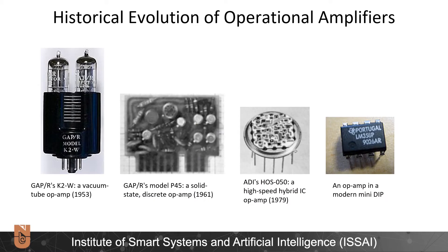Here we see the historical evolution of operational amplifiers. In 1953, we had op-amps with vacuum tubes, not even transistors. Then, the first discrete op-amps and first integrated circuits emerged in 1961 with the P45 type operational amplifier, which had visible resistors, capacitors, and other components. Later, in the 1970s close to 1980s, we had new integrated circuit op-amps. Today, and for the last 15-20 years, we have op-amps in dual-inline packages, or even smaller footprint packages such as surface mount components.